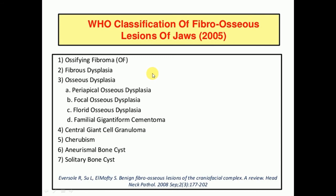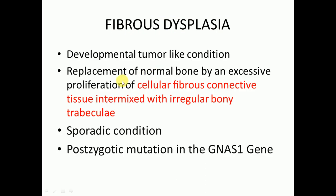Fibrous dysplasia is a developmental tumor-like condition. It involves the replacement of normal bone by an excessive proliferation of cellular fibrous connective tissue intermixed with irregular bony trabeculae. This is a characteristic feature of fibrous dysplasia. It is a sporadic condition due to post-zygotic mutations in the GNAS1 gene.